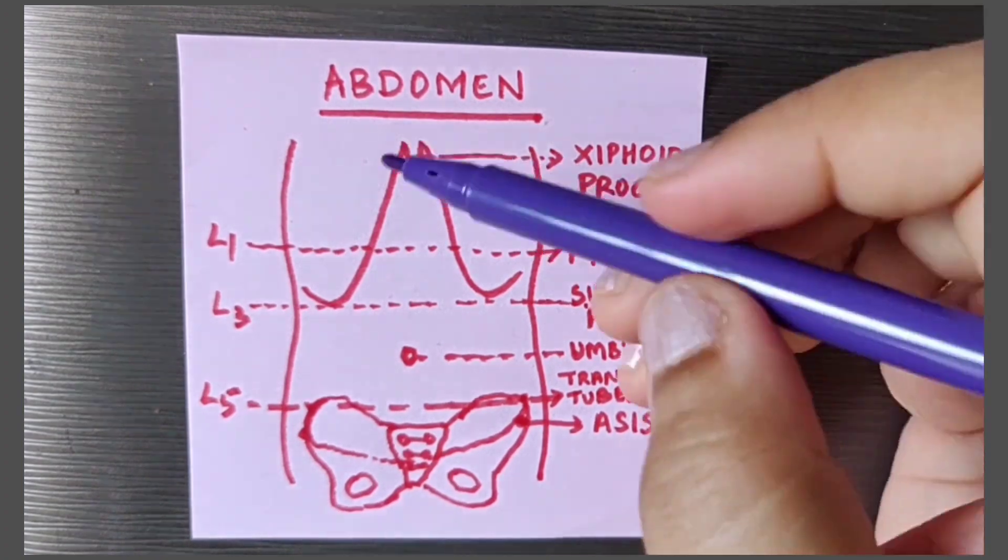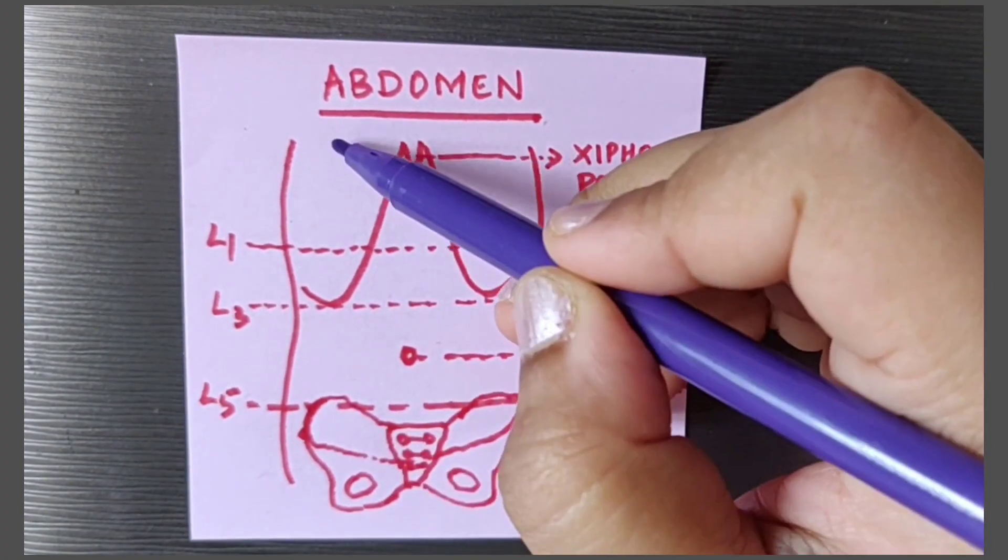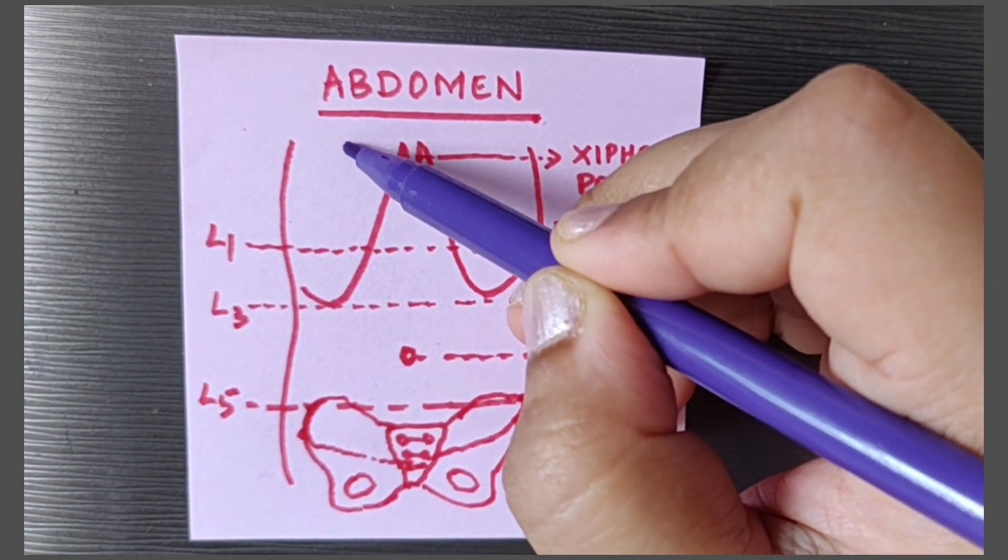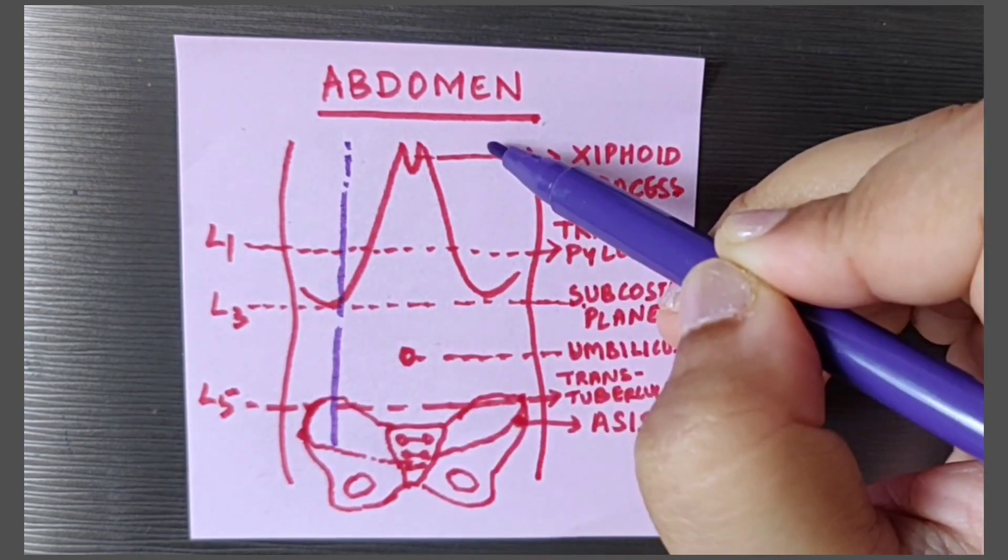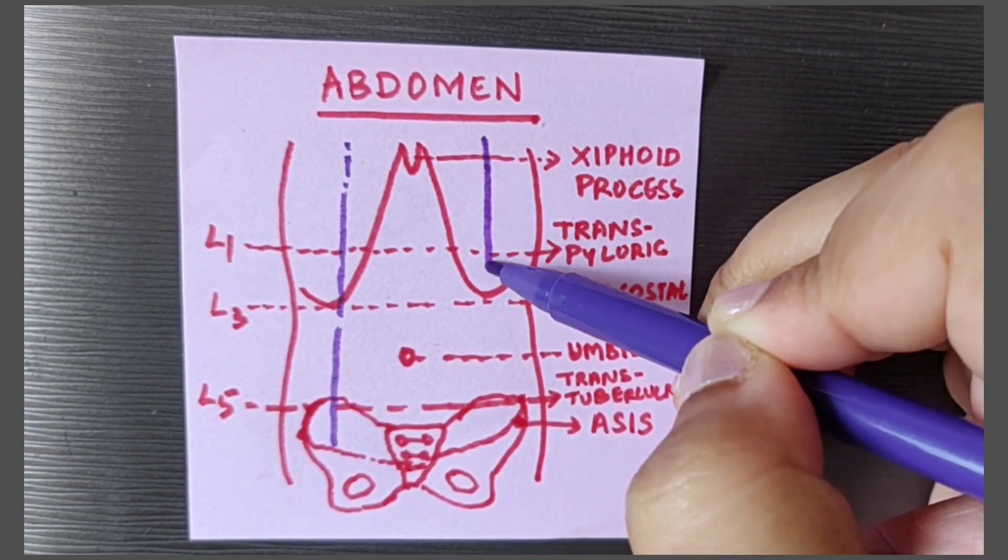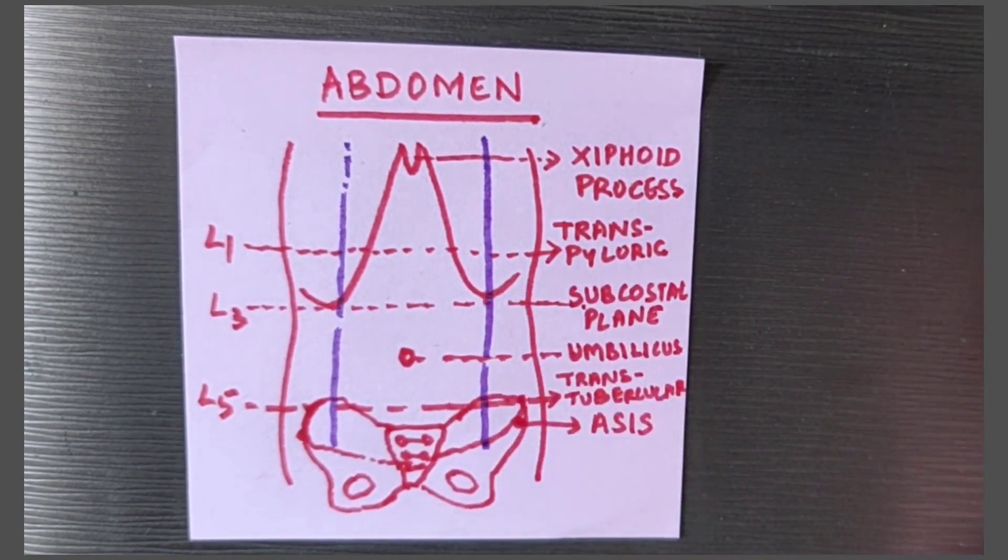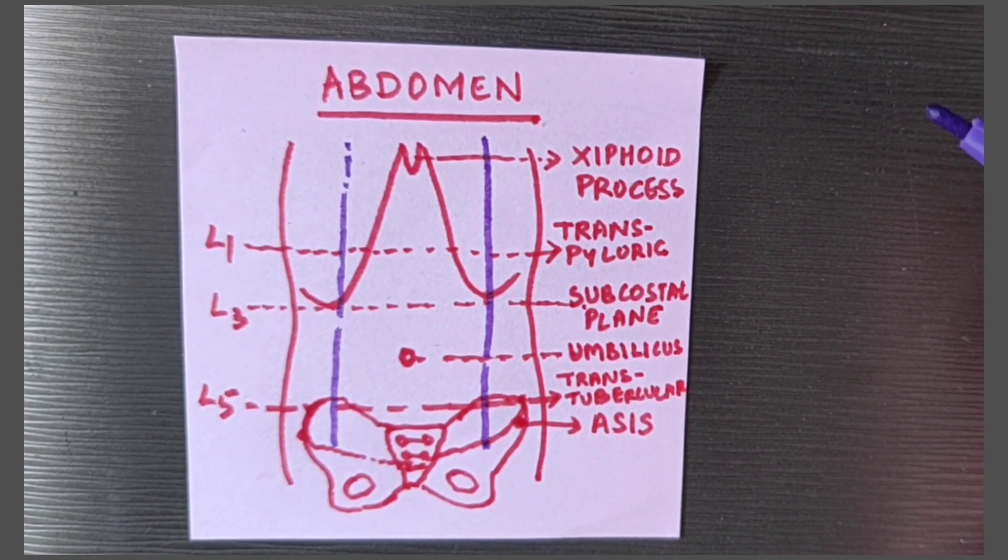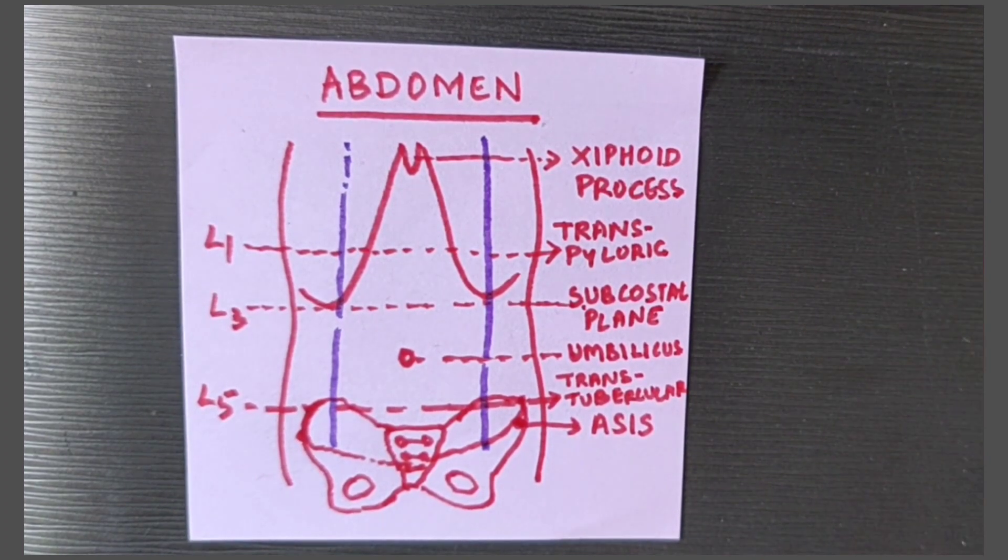Now we must draw two vertical planes on right and left side from the mid clavicular point to the mid inguinal point on either sides. So that forms the nine regions of the abdomen.